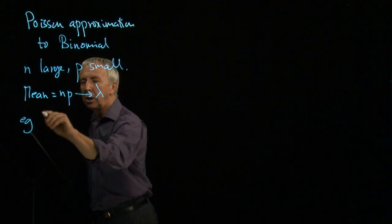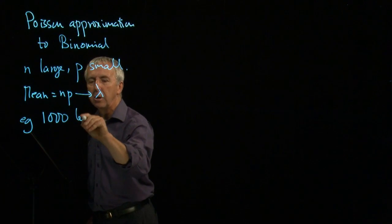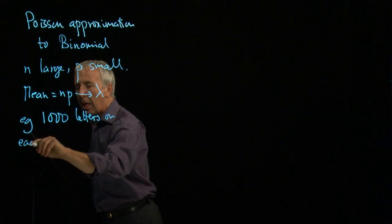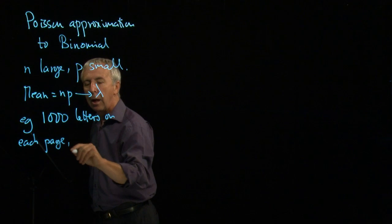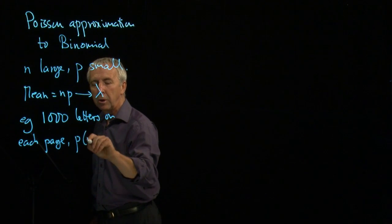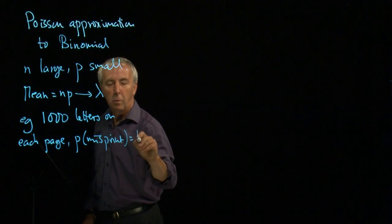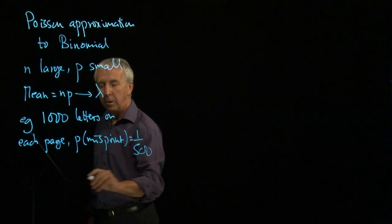So for example, there's a thousand letters on each page. And the probability of a misprint is 1 in 500.